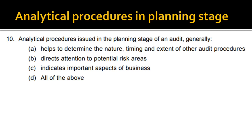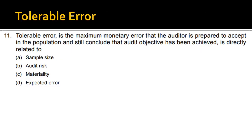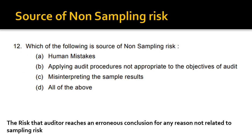Next: analytical procedures used in the planning stage of an audit generally help in determining the nature, timing, and extent of audit procedures, drawing attention to potential risk areas, and indicating important aspects of the business. So option D — all of the above — is correct. Next: tolerable error is the maximum monetary error that the auditor is prepared to accept in the population and still conclude that the audit objective has been achieved. It is directly related to materiality.